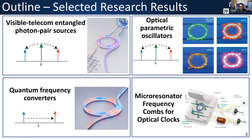I'll go into some of the ingredients involved in getting efficient nonlinear processes to work in our particular geometries — nanophotonic resonators — and then talk about specific device demonstrations: visible-telecom entangled photon pair sources, micro-resonator optical parametric oscillators, quantum frequency converters, and platforms where we can flexibly tailor nonlinear interactions. I've also listed micro-resonator frequency combs for optical atomic clocks, though I won't have a lot of time for combs in this talk.